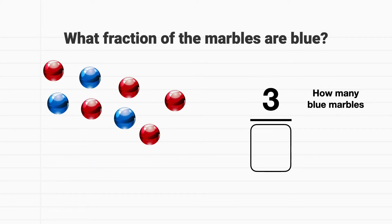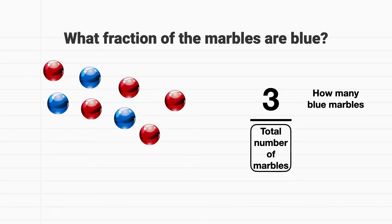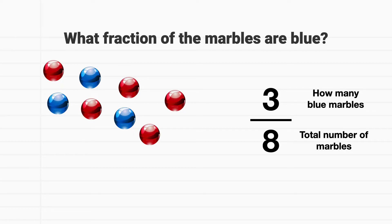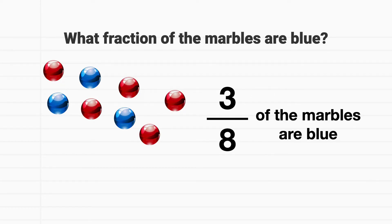So our numerator is 3. The denominator represents the total number of pieces in the whole, which here is the total number of marbles on the table. How many marbles are there in total? There are 1, 2, 3, 4, 5, 6, 7, 8 marbles in total. So the denominator is 8. We can say that 3 eighths of the marbles are blue.